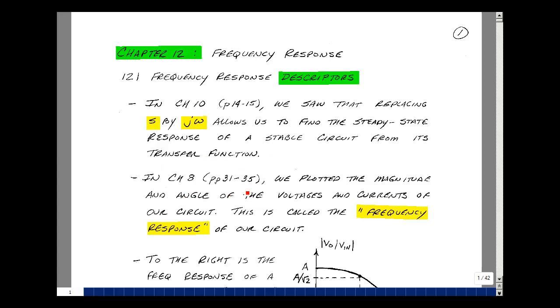In Chapter 8, on pages 31 to 35, we plotted the magnitude and angle of various voltages and currents. This is called the frequency response of our circuit.